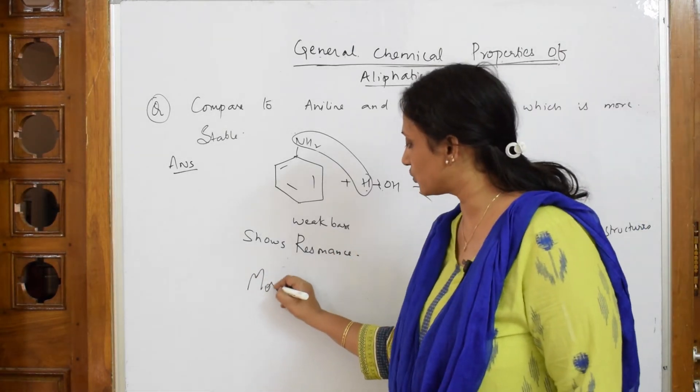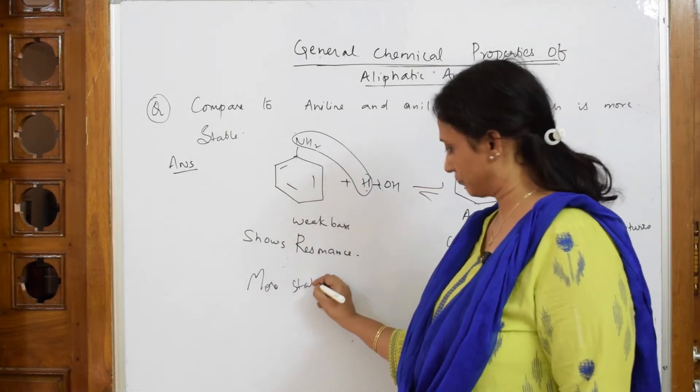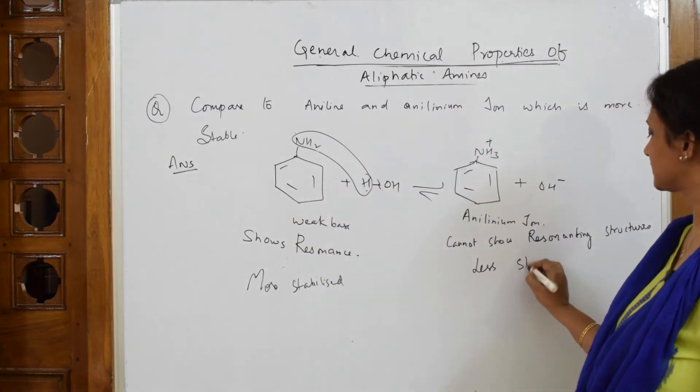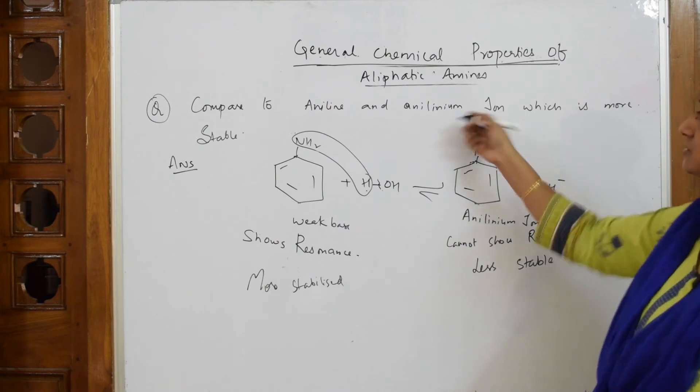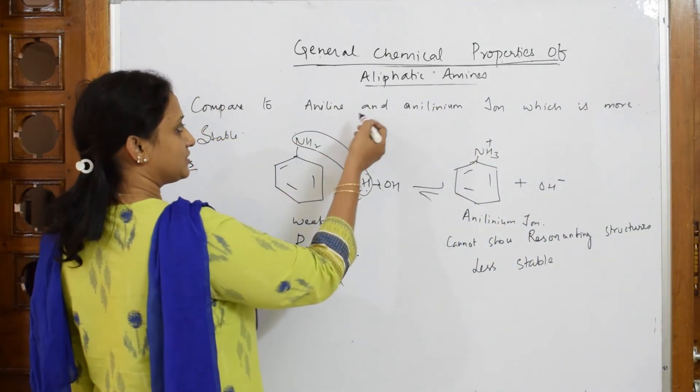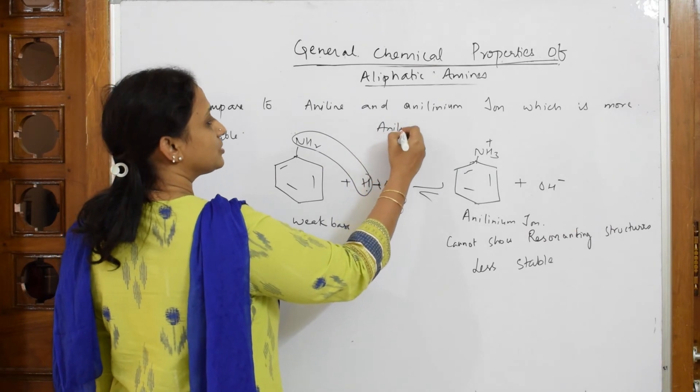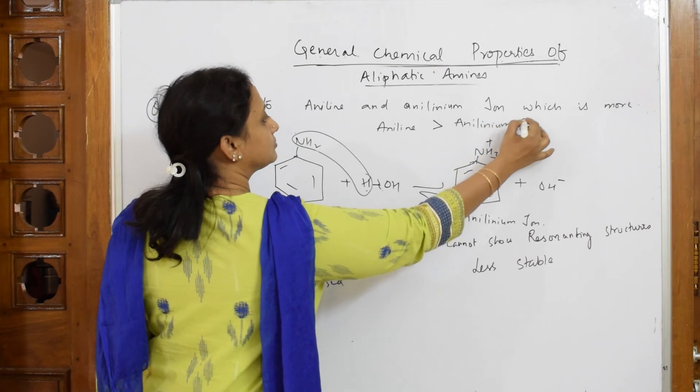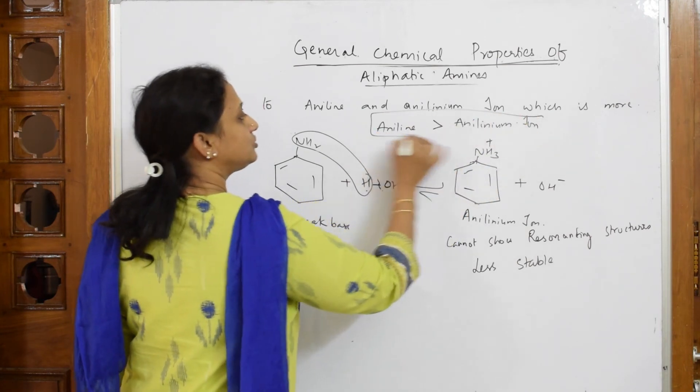Whichever shows resonance is more stabilized. Anilinium ion does not show resonance, so it is less stable. Therefore, aniline is more stable than anilinium ion due to resonance.